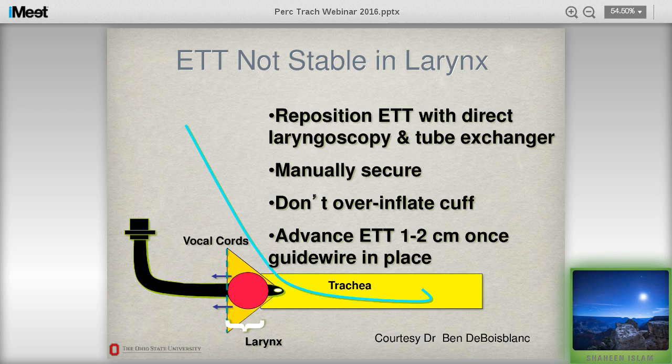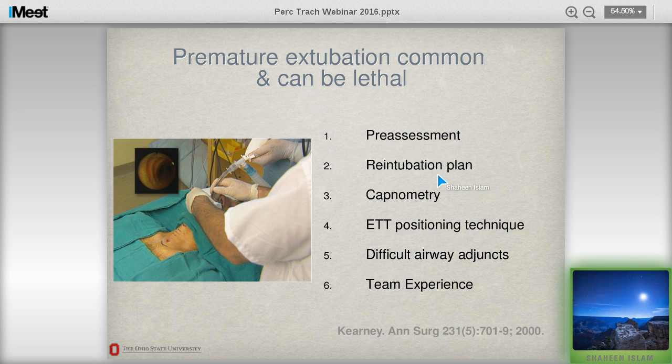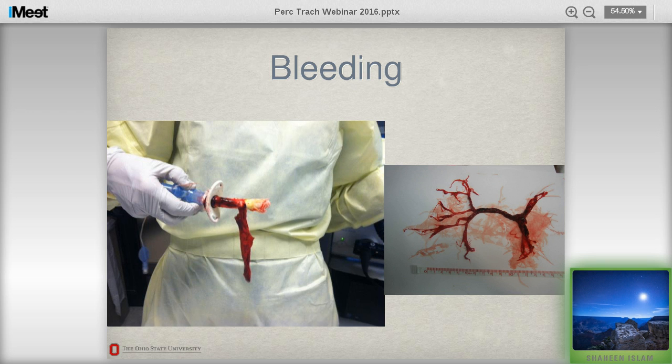If premature extubation happens, have a re-intubation plan. Sometimes our first-year fellows are not yet competent with this, so we review intubation, especially bronchoscopic intubation — though in an obese patient you may need a laryngoscope to find the airway. Bleeding can happen. We've had cases where after pulling out the tracheostomy tube there is a blood clot. Most of the time it's venous bleeding and can be controlled by tamponade pressure. If not, we had to ligate one vessel, or you can use Surgiseal. Choosing where to incise and using epinephrine should prevent it from being a big issue.